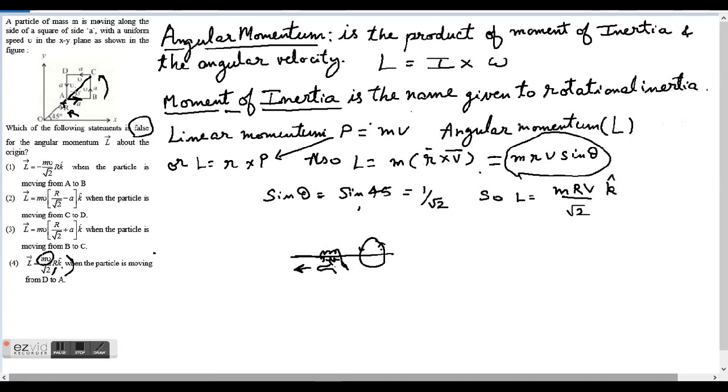When the particle is moving from B to C, the length of vector r will be this much. Now this is the diagonal of square with side a, and I know that the diagonal is equal to root 2 times side, so it will be root 2 a. So in this case mv and then r upon root 2 plus a. If I take the LCM, it's nothing but r plus root 2 times a, that's the length of the r vector.